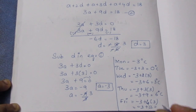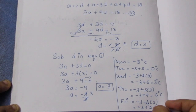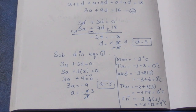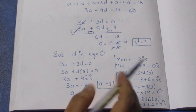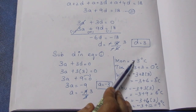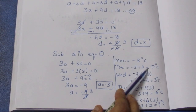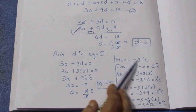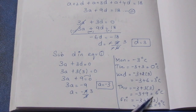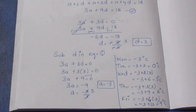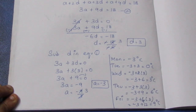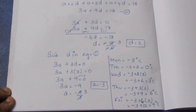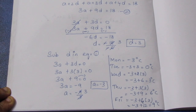Substituting d equals 3 back, we find a equals minus 9 degrees Celsius. So the temperatures from Monday to Friday are: minus 3 degrees, 0 degrees, 3 degrees, 6 degrees, and 9 degrees. That is the final answer for this sum. Thank you.